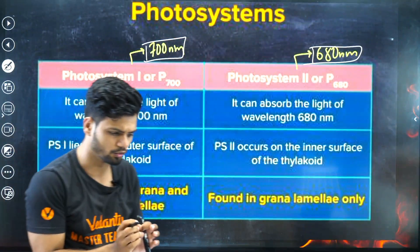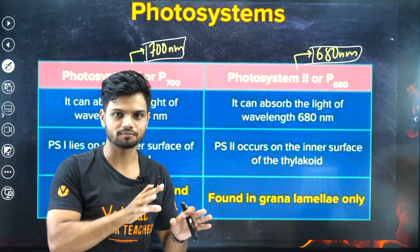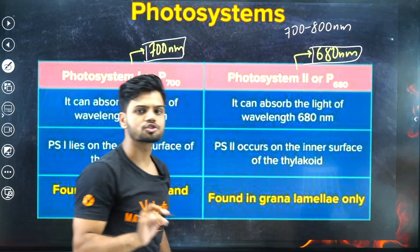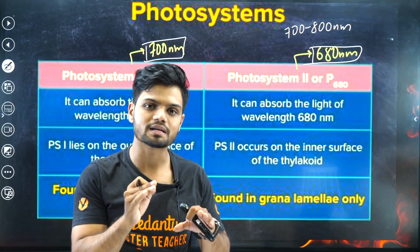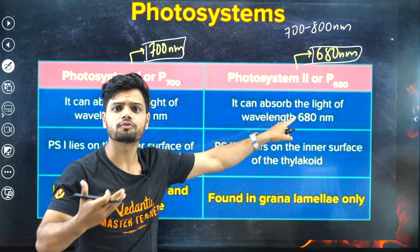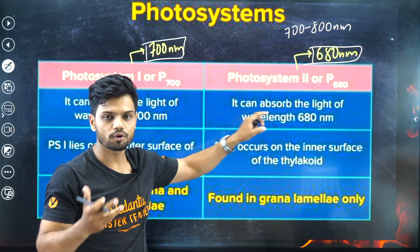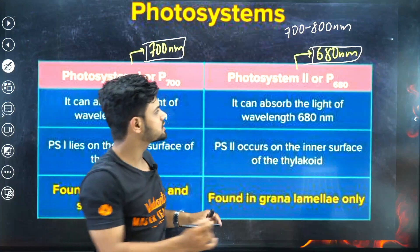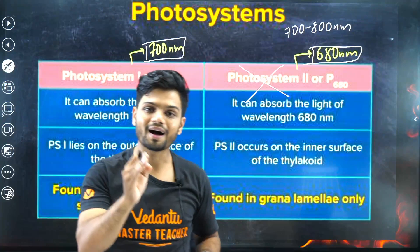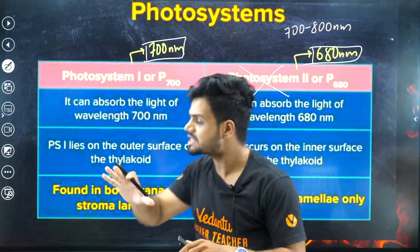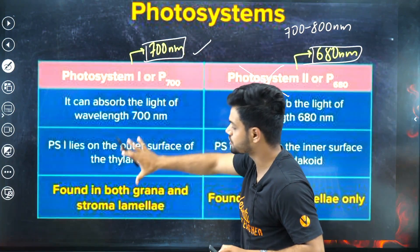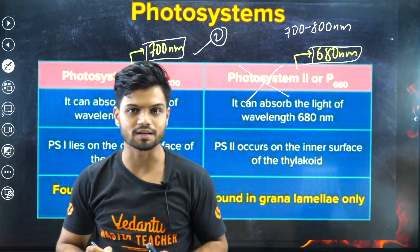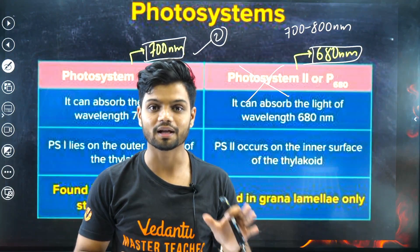Now, the question gives us far-red light with a wavelength between 700 to 800 nanometers. Think logically: if the wavelength is more than 700 nm, Photosystem 2 will not be functional, because its maximum absorption occurs at 680 nanometers. So Photosystem 2 is going to be completely shut down in far-red light. Only Photosystem 1 will be functional — that is concept number two.